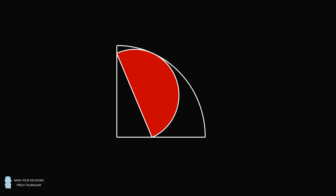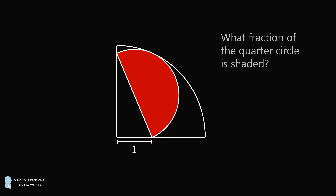Hey, this is Presh Talwalkar. We have a quarter circle and a semicircle that's inscribed in the quarter circle in the following fashion. The arc of the semicircle is just tangent to the arc of the quarter circle, and the endpoints of the diameter of the semicircle are along the two adjacent radii of the quarter circle. If the distance between the center of the quarter circle and one of the endpoints of the diameter of the semicircle is equal to one, then what fraction of the quarter circle is shaded? In other words, what is the ratio of the semicircle's area to the quarter circle's area?